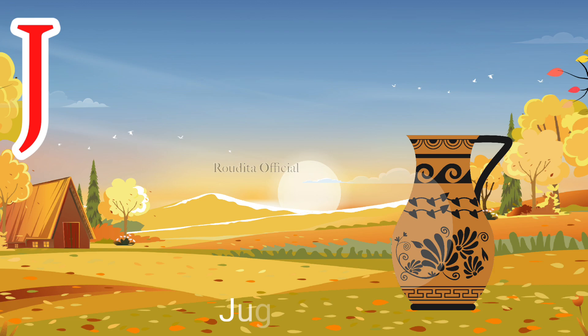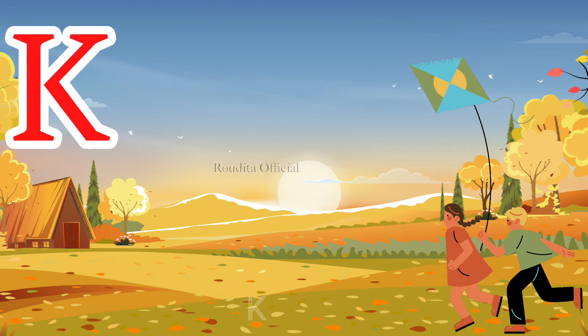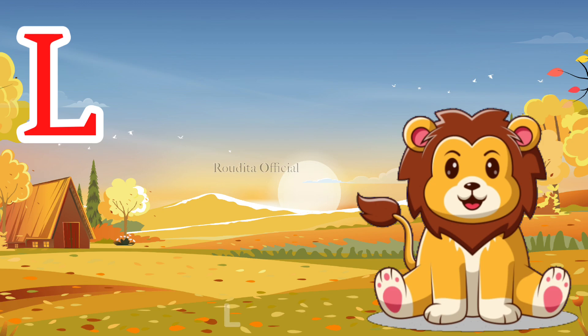G for jug, J-U-G, jug. K for kite, K-I-T-E, kite. L for lion, L-I-O-N, lion.